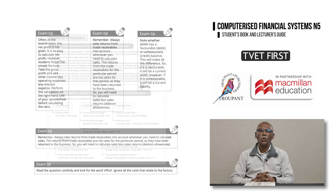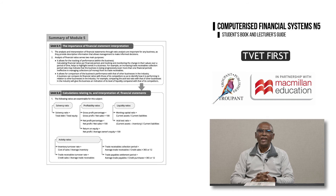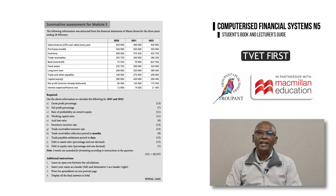Number 4: each module ends with a summary in flow diagram form, so students can revise all the module summaries to check their understanding and prepare for exams. Number 5: each module has summative activities which include exam-type questions, and these help students to prepare for exams.